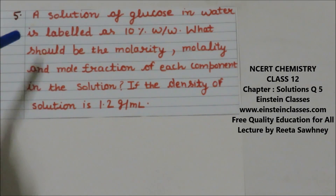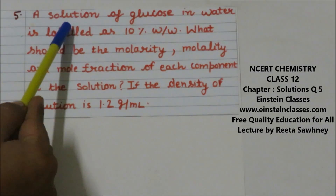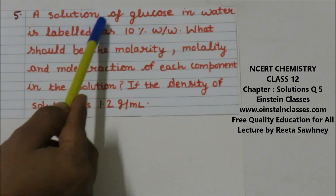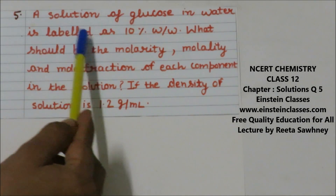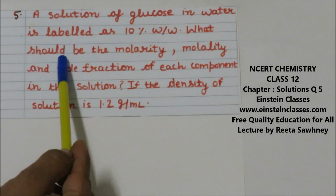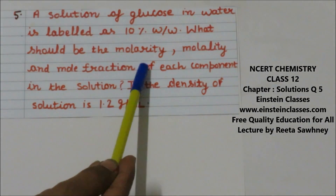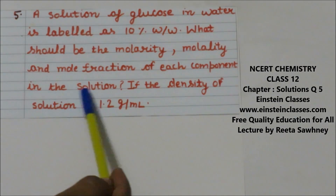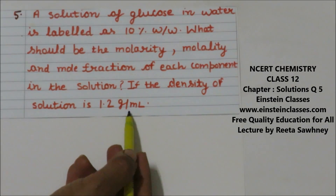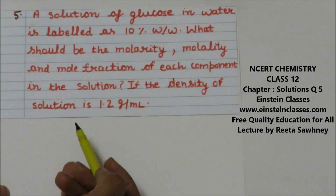We are going to discuss the NCERT back exercise problem. The problem is: a solution of glucose in water is labeled as 10 percent weight by weight. What should be the molarity, molality, and mole fraction of each component of the solution, if the density of the solution is 1.2 gram per mL?